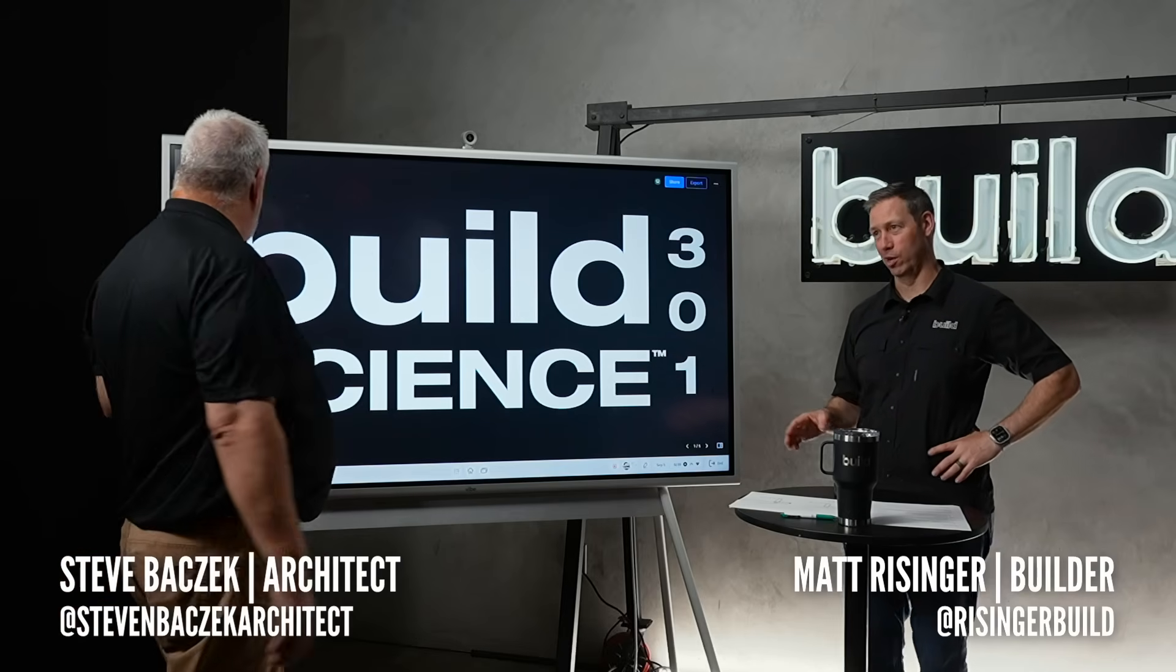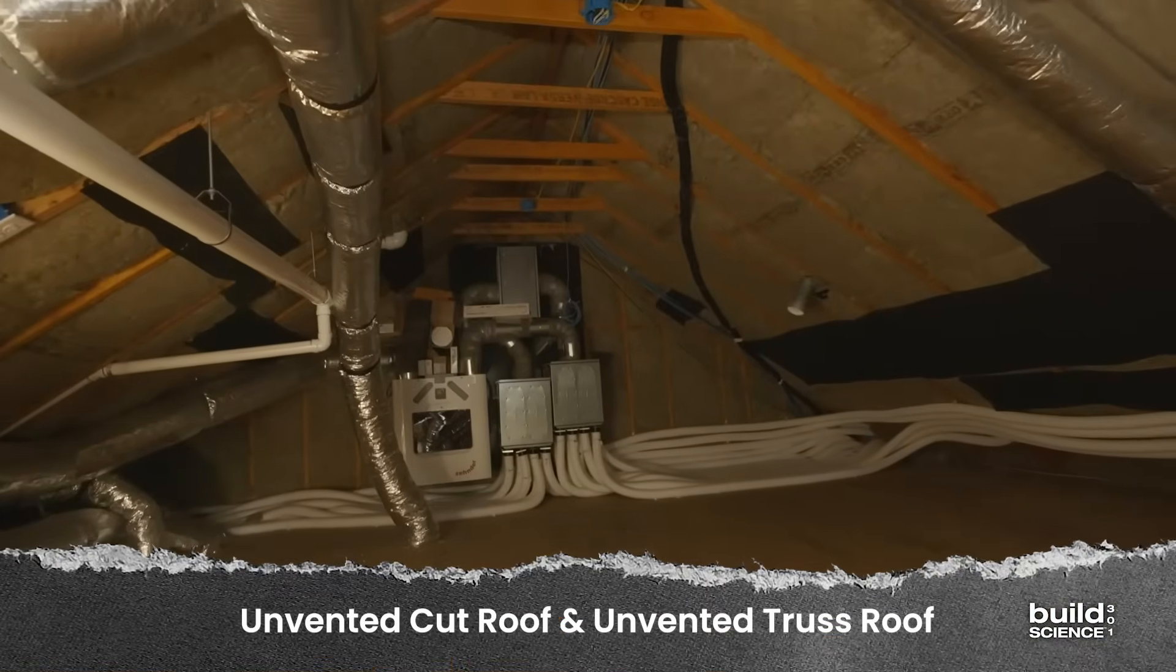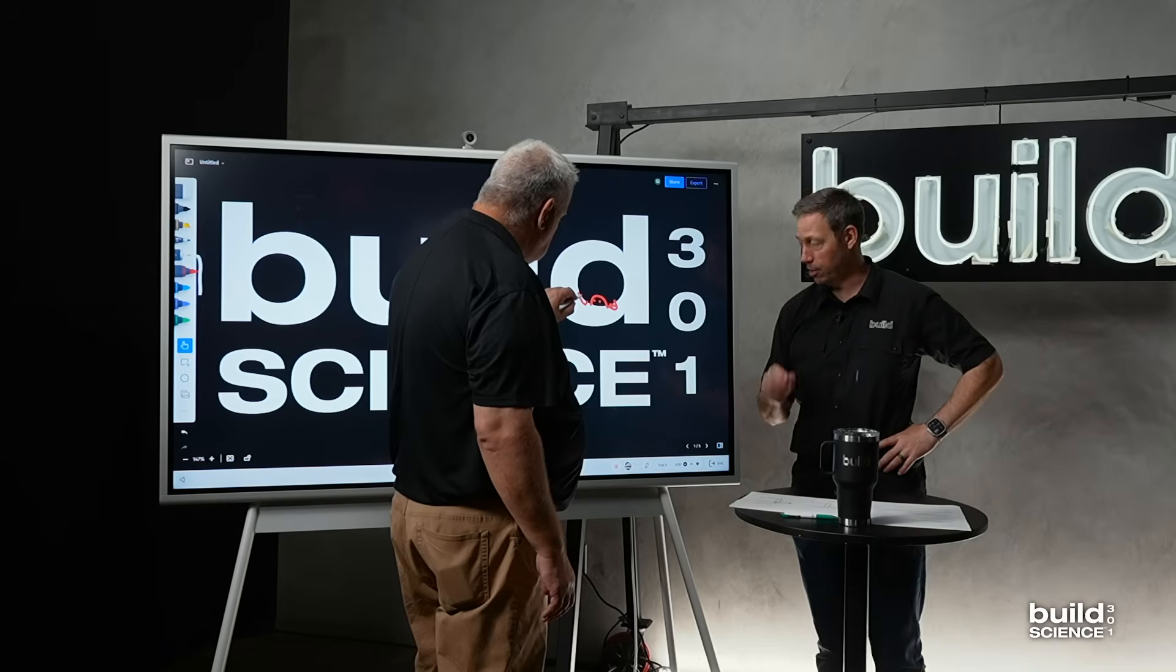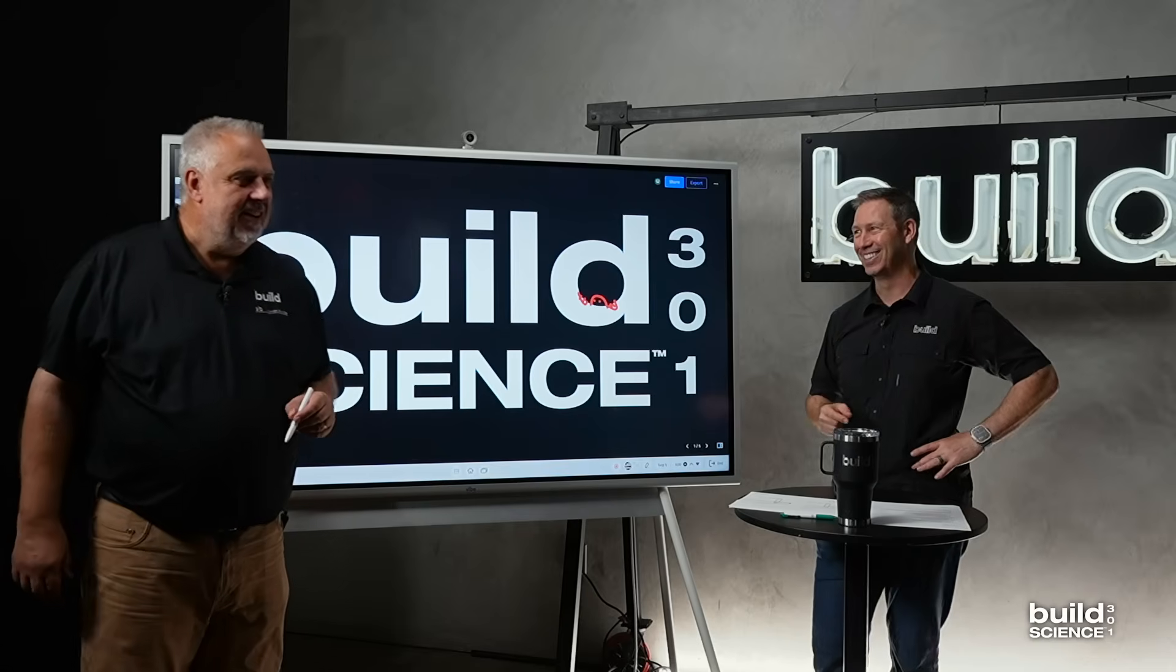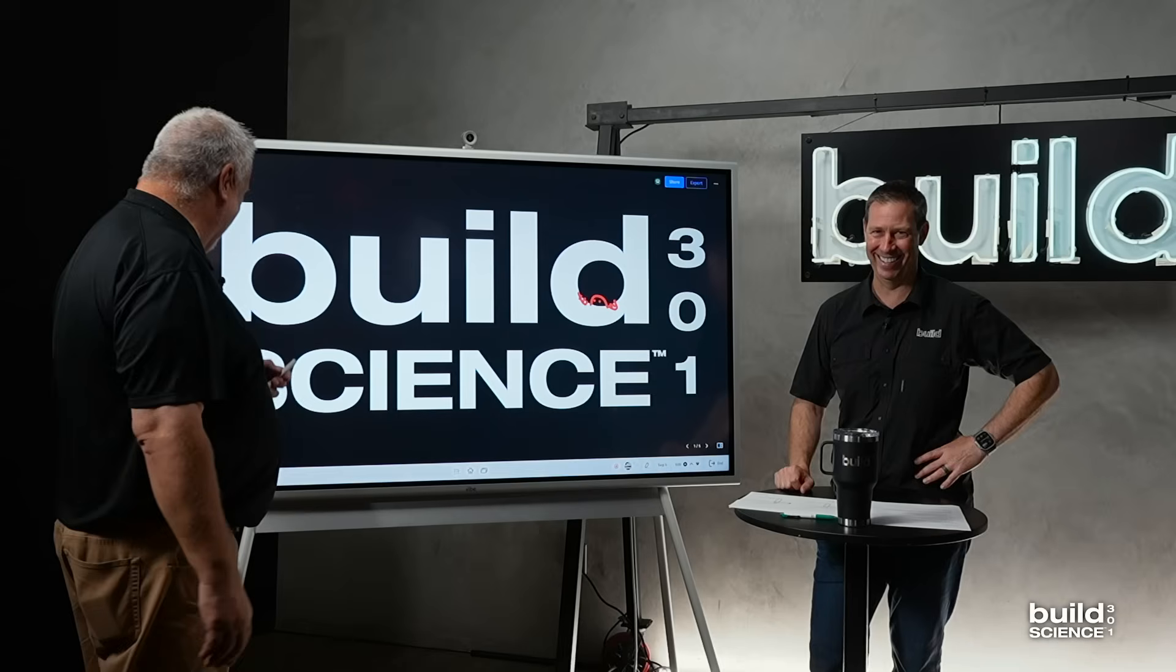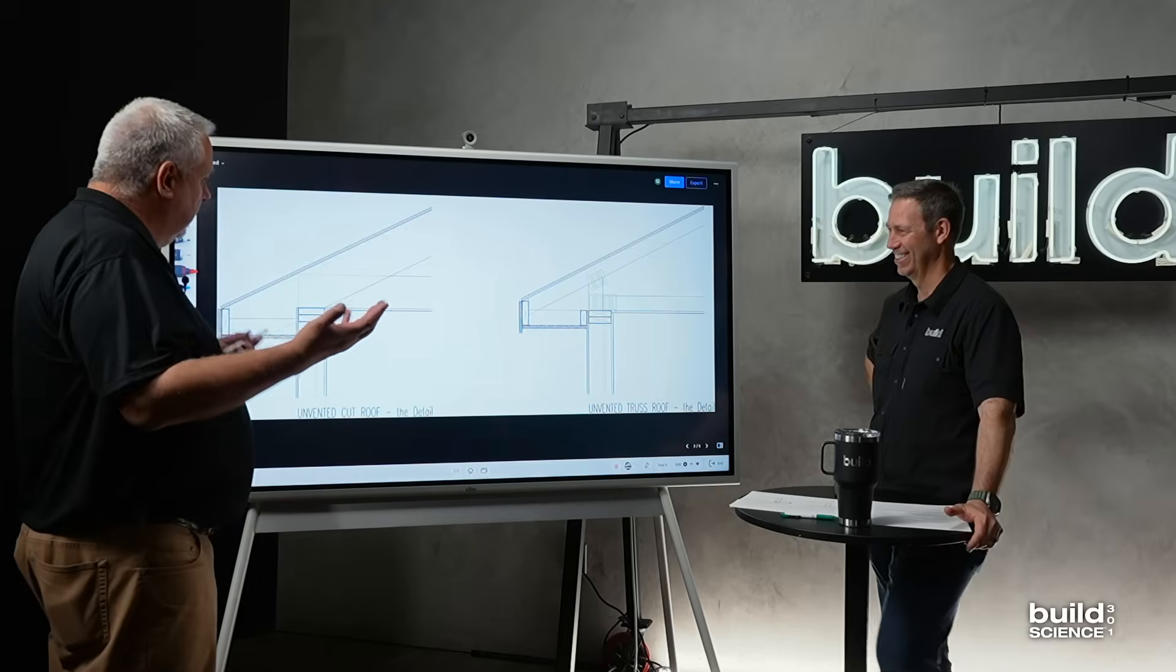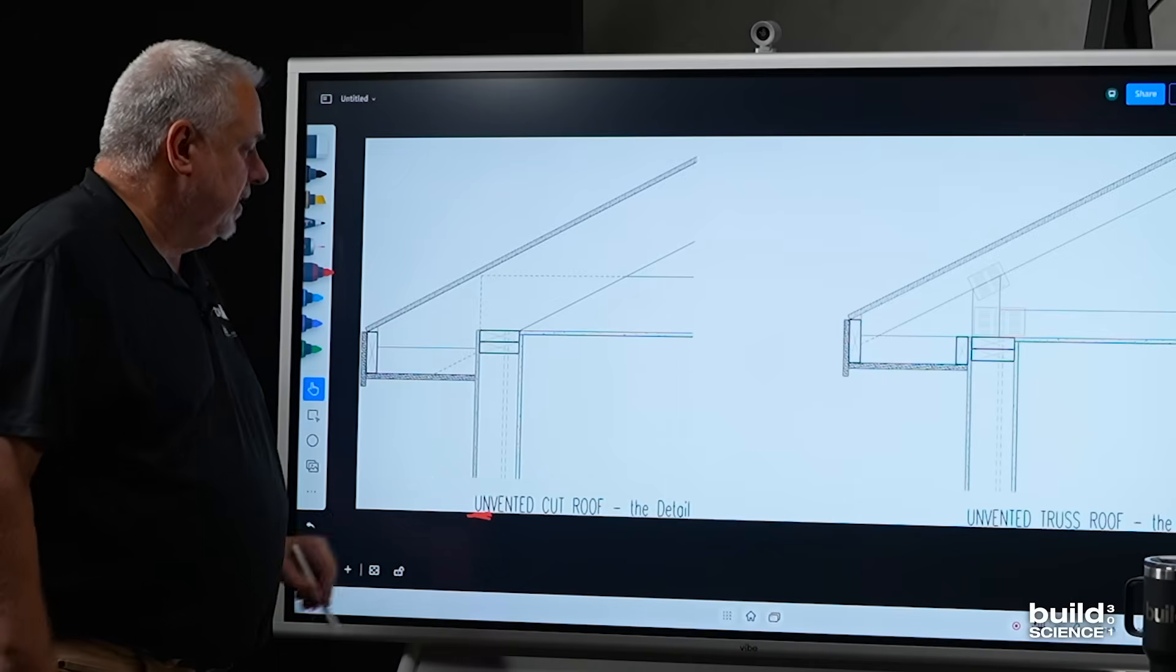All right, my friends, welcome back to Build Science 301. We're jumping into a roof assembly called an unvented roof assembly. We spent a lot of time in the last episode talking about vented. So now, Steve, let's talk about unvented. Let's talk a little 301. On to unvented roof. All right, notice vent is gone.